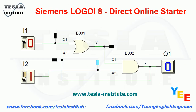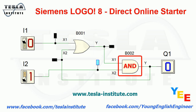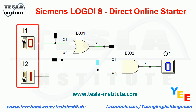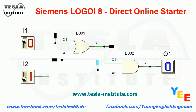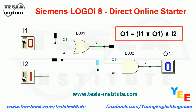Now let's look at the Function Block Diagram, which is the program for the Logo controller. To create it we used 2 blocks: 2 simple logic gates — B001 OR and B002 AND. It is a simple sequential circuit with 2 inputs I1 and I2, and 1 output Q1. The circuit can be described by the following formula.